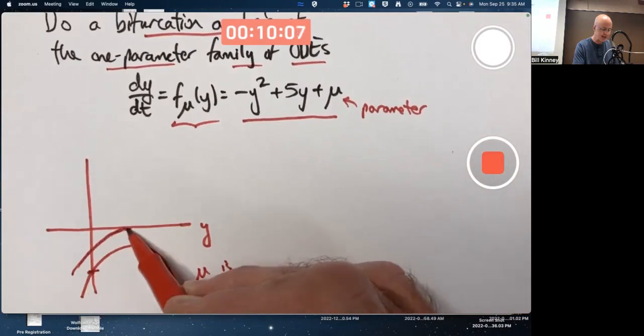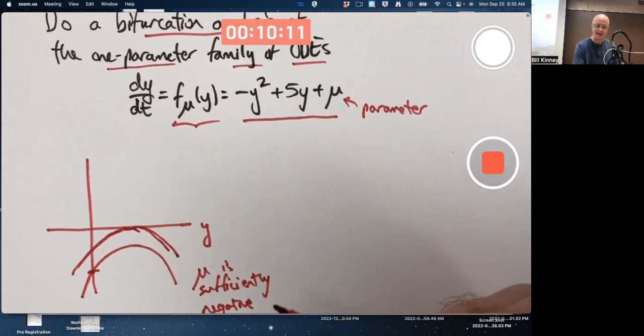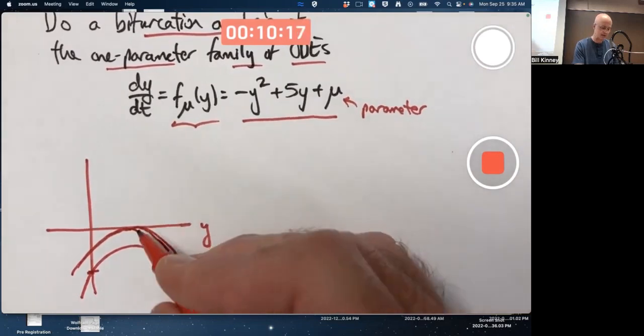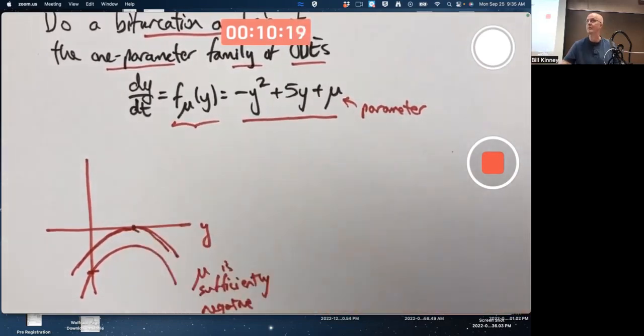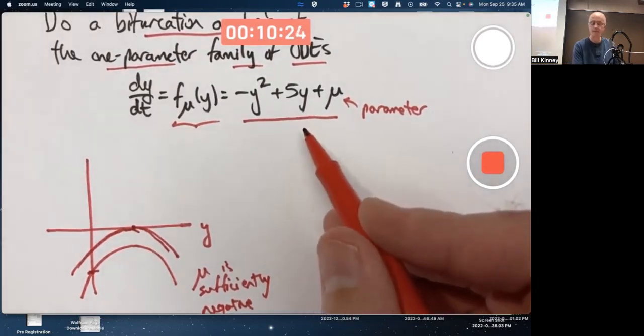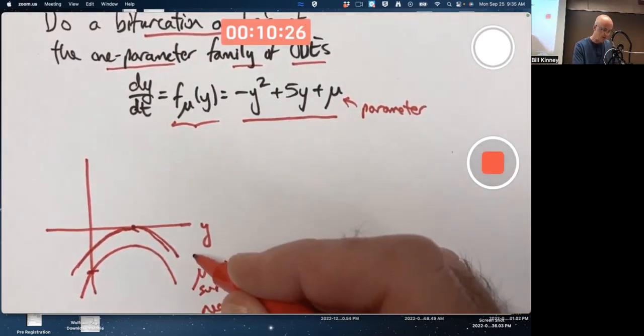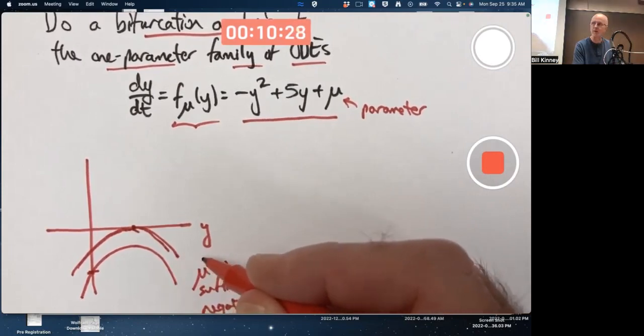So there's some negative value where the graph just touches the horizontal axis. Whatever value of mu makes that happen is going to be the bifurcation value because that's where in the phase line you're going to go from having no equilibrium points to one equilibrium point. So here mu would be negative, but exactly what negative number that is, we don't know yet.